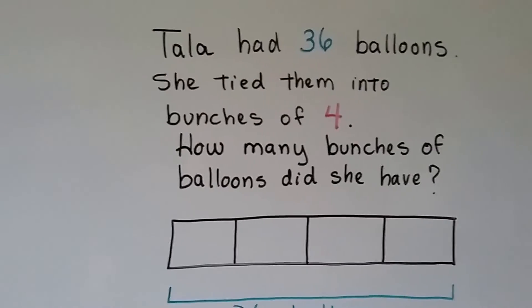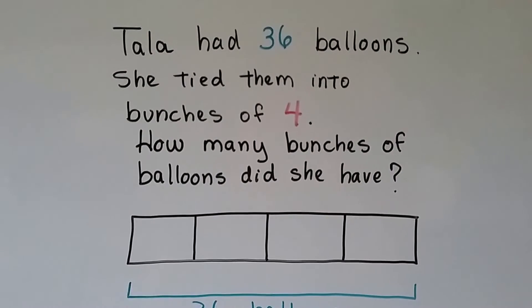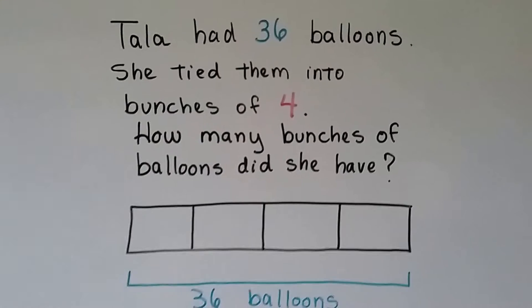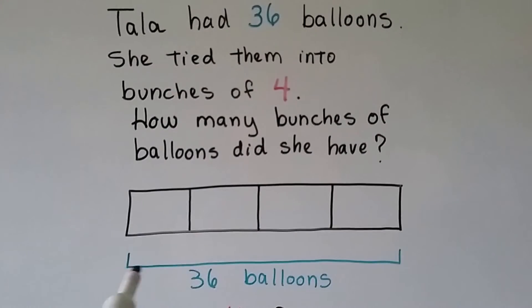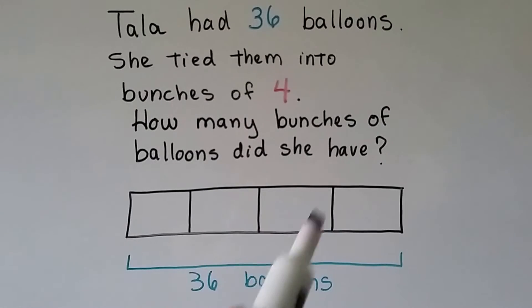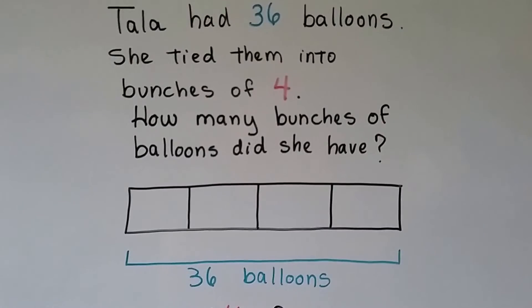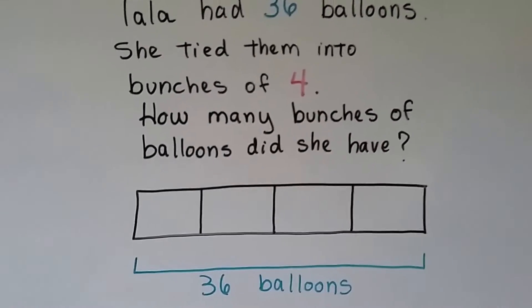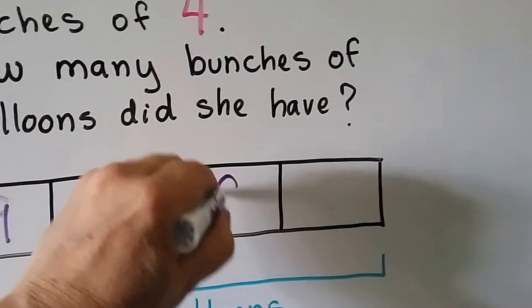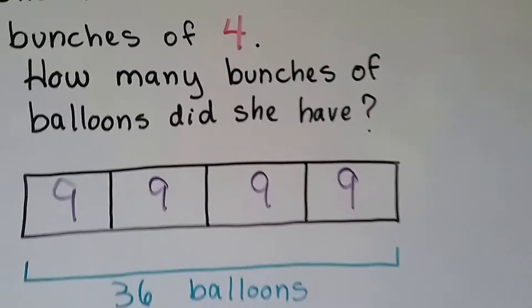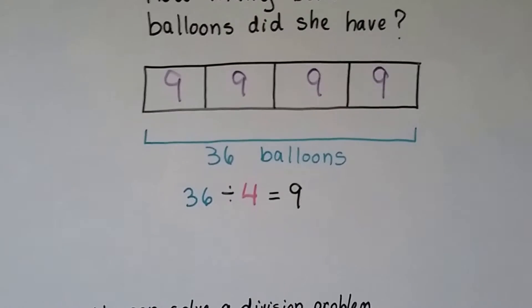Tala has 36 balloons. She tied them into bunches of 4. So how many bunches of balloons did she have? The whole rectangle is the 36 balloons. They're in bunches of 4, so we've got 4 boxes. How many would have to go into each box, the same amount, so that we would have 36? We'd have to put a 9 in each box. So that's how many bunches she had. 36 divided by 4 equals 9.